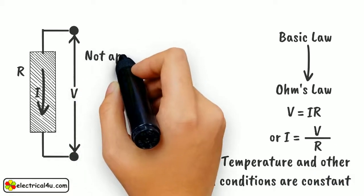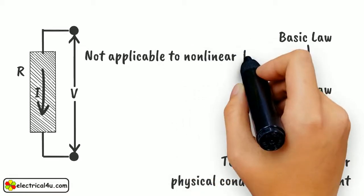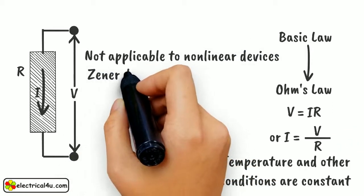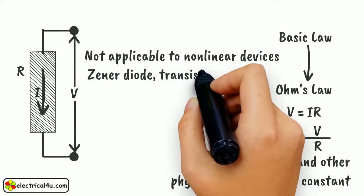Ohm's law is not applicable to non-linear devices like Zener diode, transistor, thyristor, etc.